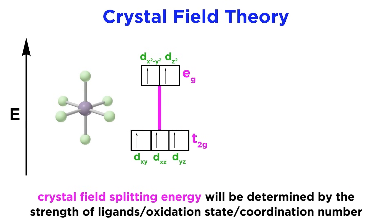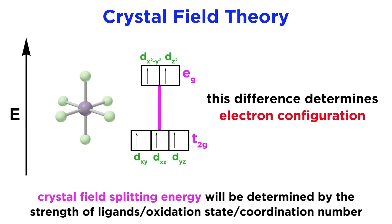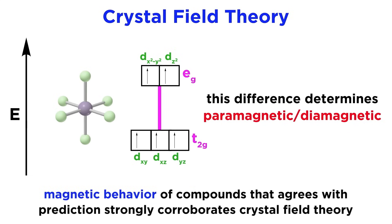So to reiterate, the strength of the ligands surrounding the metal atom, along with other factors like oxidation state and coordination number, will determine the magnitude of the crystal field splitting energy, or the difference in energy between the t2g orbitals and the eg orbitals. This in turn will determine the electron configuration, and thus other characteristics of the complex, such as paramagnetism versus diamagnetism. The corroboration of the predicted magnetic behaviors of different coordination compounds is very strong evidence in favor of crystal field theory.